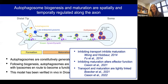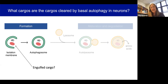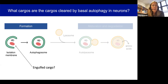We spent a lot of time thinking about the motors driving this process and how they're regulated. But what I want to spend today talking about is the cargoes that are engulfed by this autophagic process. There have been many suggestions over the years of specific cargoes that could be degraded by autophagy. What we wanted to know was exactly what is the range of cargoes, and what are the most important cargoes turned over by autophagy in neurons and more generally in the brain.